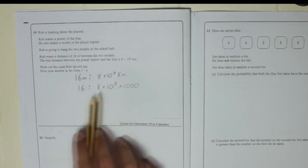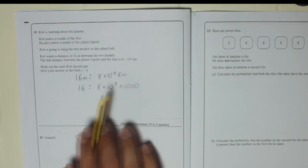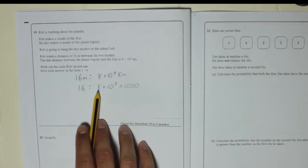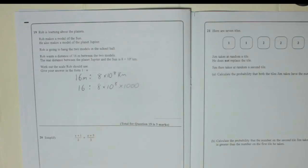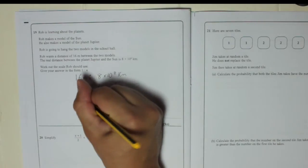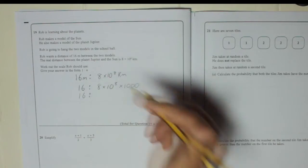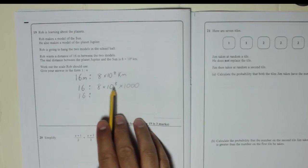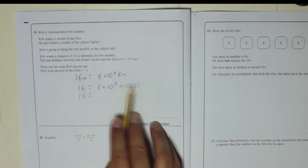To turn kilometres into metres you need to times by a thousand. So now we don't have to use units. We can just say the ratio is 16 to 8 times 10 to the power of 8 times a thousand. So let's just tidy that up. That means 16 to 8 times 10 to the power of 8 times by 10 times by 10 times by 10. Because that's what a thousand is, 10 times 10 times 10.